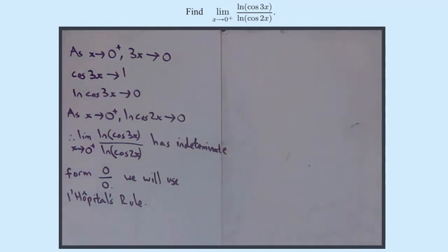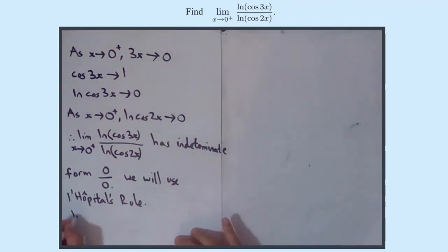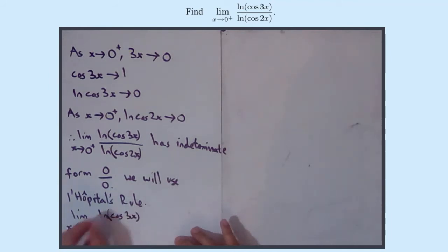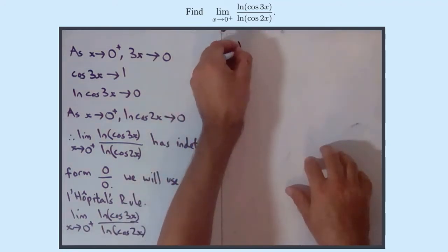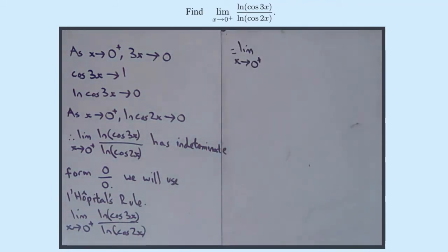L'Hôpital's rule says that the limit as x approaches 0 from the right-hand side equals the limit of the quotient of the derivatives. So now applying L'Hôpital's rule to ln(cos 3x) over ln(cos 2x), we need to differentiate both of these. Hopefully you remember that the derivative of ln(f(x)) is f'(x) over f(x).